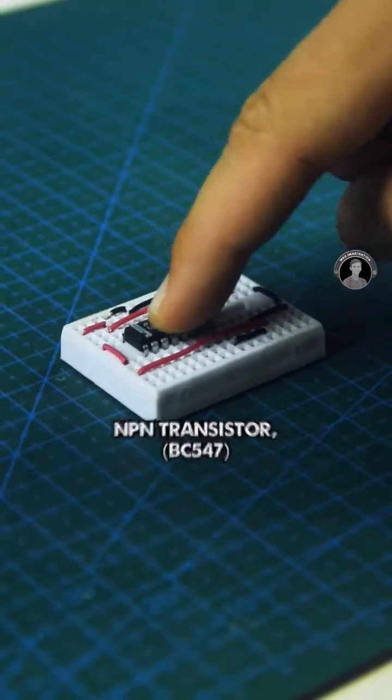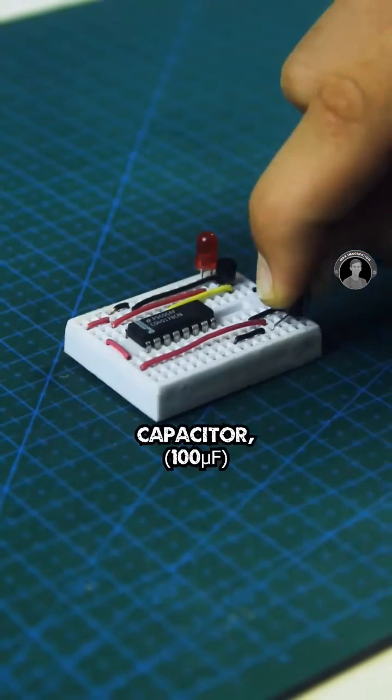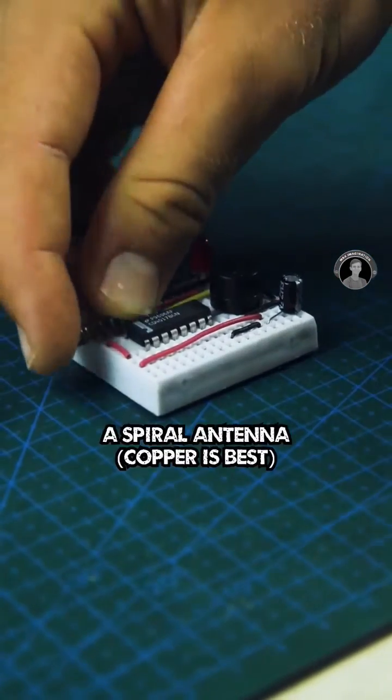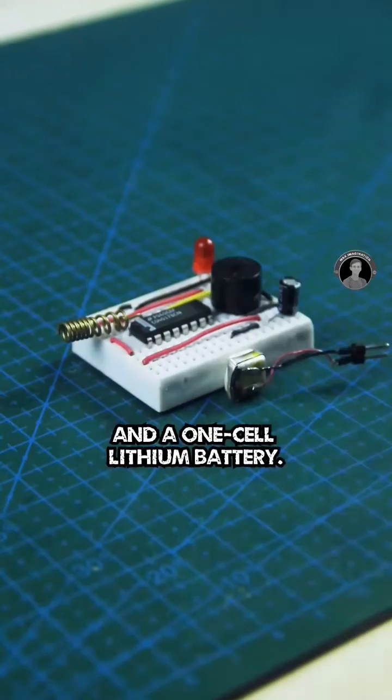Then comes the decade counter chip, NPN transistor, LED capacitor, 5 volt buzzer, a spiral antenna, and a one-cell lithium battery.